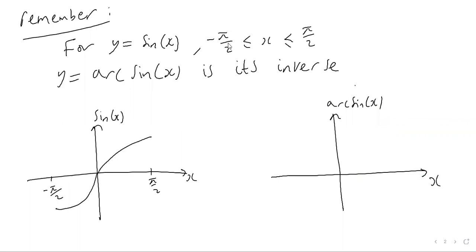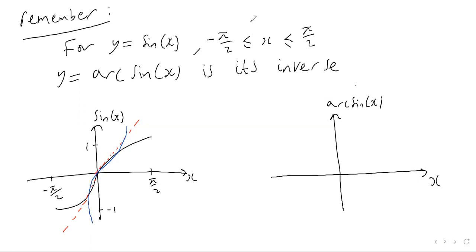So that's kind of the objective here. When we sketch the arcsin, arccos, and arctan graphs, we're going to reflect the sin, cos, and tan graphs over this mirror line, this 45-degree y equals x line. So remember that if y equals sine x between minus pi over two and pi over two, like this graph of sine x between minus 90 degrees and 90 degrees, then arcsin is the inverse of this graph.